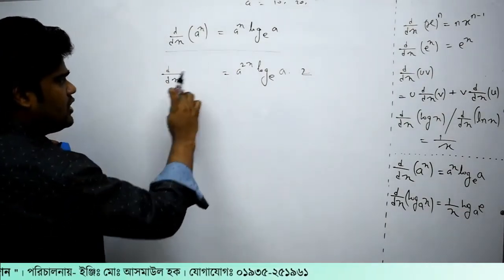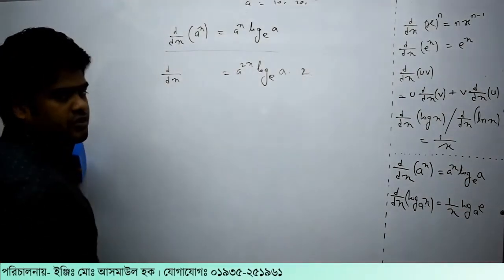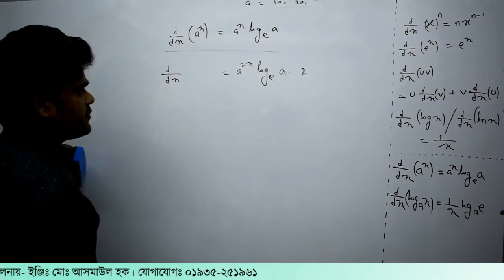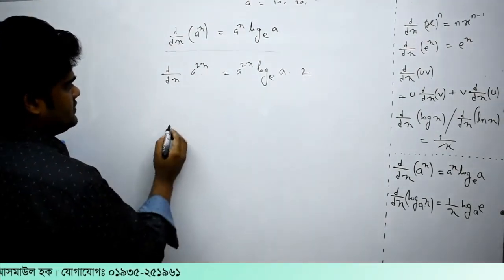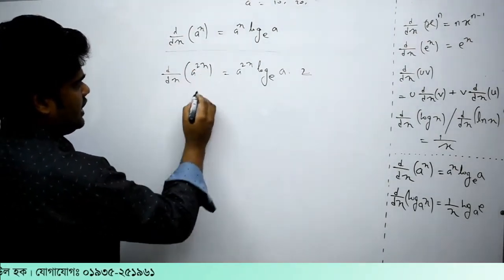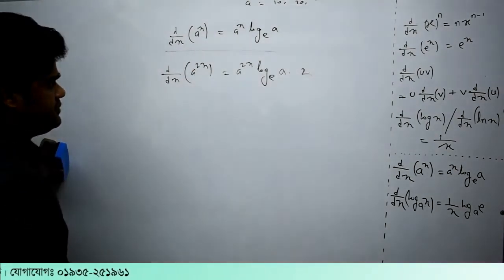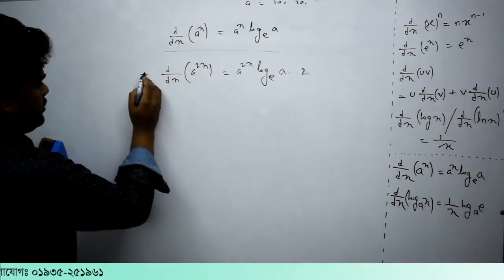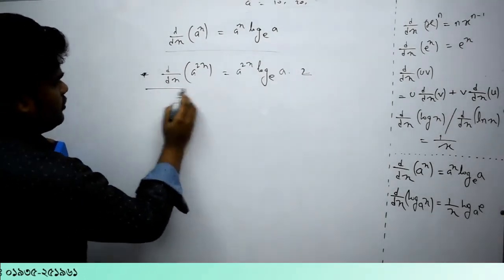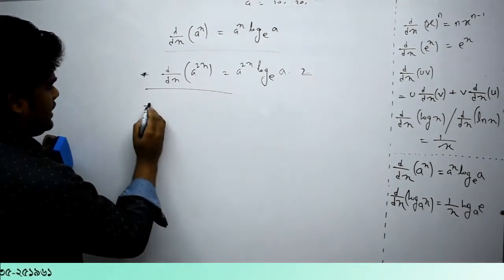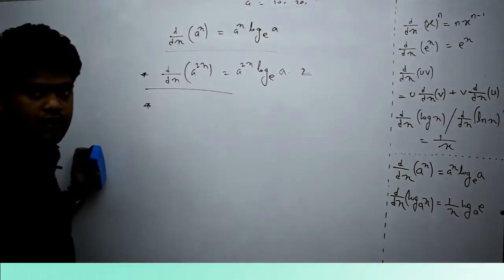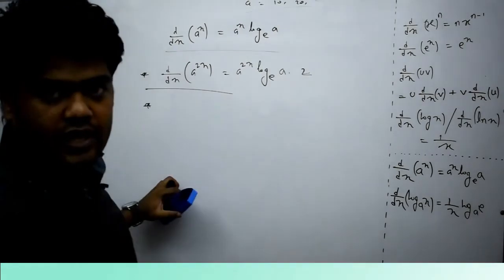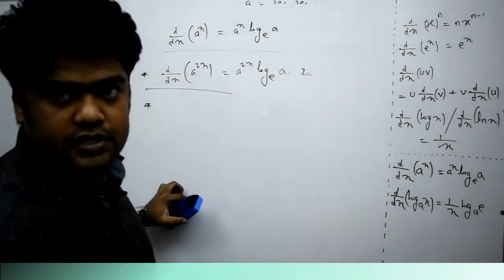I want to tell you that a to the power of a to the power of 2x — this is the exact direction of x. Here you can see this is the exact direction, and the direction of x is the same way as the basic direction to teach.